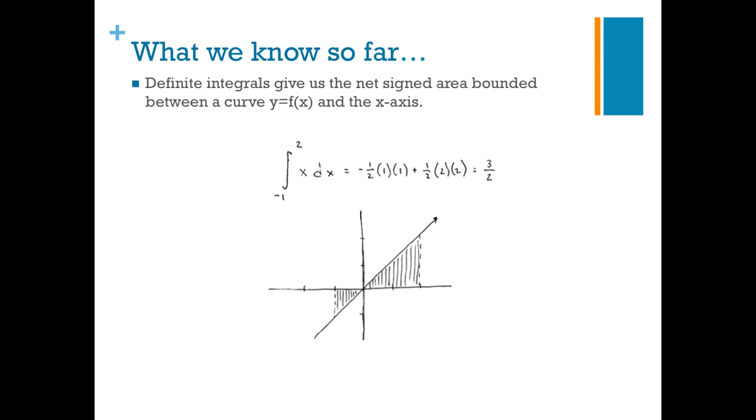We know that whenever you integrate, you're treating stuff above the x-axis as positive, and stuff below the x-axis as negative. Notice that the stuff below the x-axis is a right triangle, and that has an area of 1 half base times height, but you pop a minus sign in front of it to indicate that you're finding net-signed area rather than actual area.